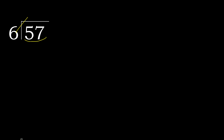6 multiplied by which number is nearest to 57 but not greater? 6 multiplied by 9 is 54 — not greater.